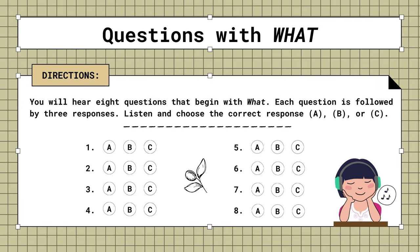4. What do you want to eat? A. A window seat would be fine. B. We should meet soon. C. Just a salad.